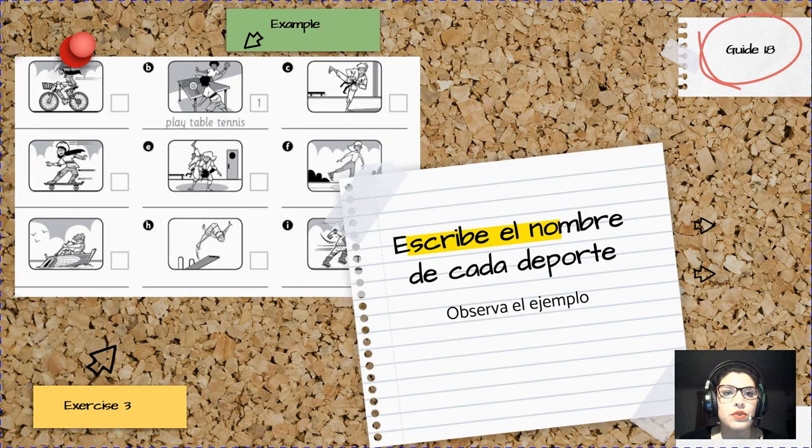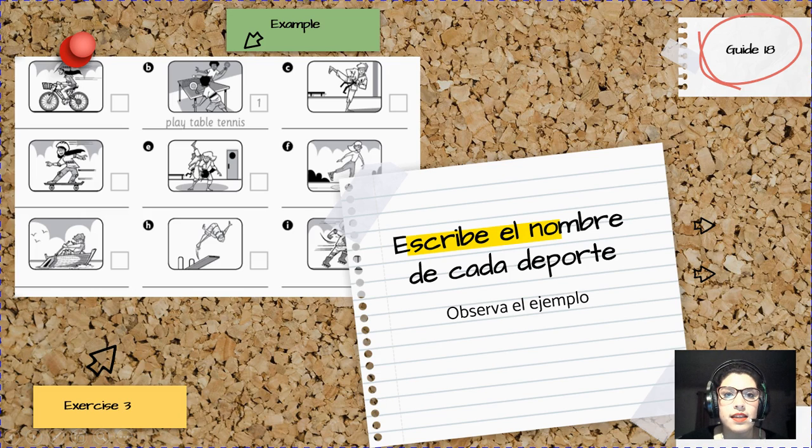Then, you have to write the name of this sport. It's all you have to do. Todo lo que tienes que hacer es escribir el nombre de los deportes abajo en el espacio A. Observa el ejemplo que dice play table tennis.